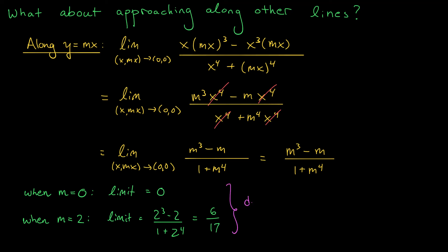Now, as you can see, these limits don't match up. Along this path, I have a limit of 0. Along this path, I have a limit of 6 over 17. Therefore, my limit doesn't exist.